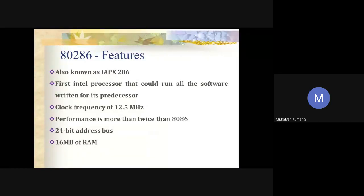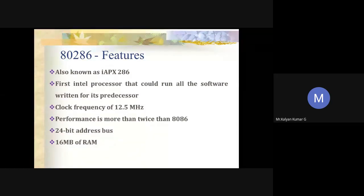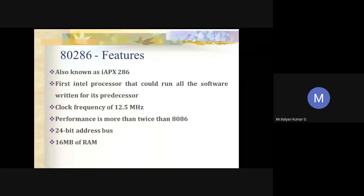The 80286 has a 24-bit address bus, meaning 2 to the power 24, which gives roughly 16 MB of RAM. It is designed to run multitasking applications. It can work in two different modes: real mode, used for compatibility with existing 8086 software, and protected mode, used for enhanced system-level features such as multi-tasking, protection, and memory management unit.